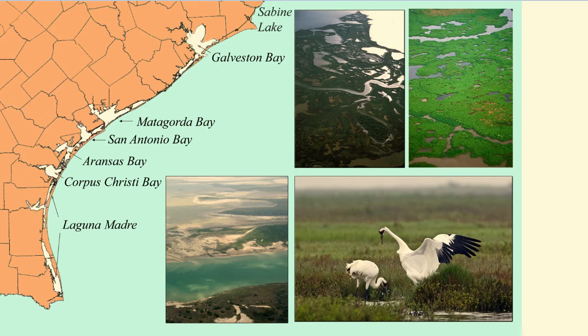In Texas, many bays are also estuaries. There's often no clear point at which the estuary ends and a bay begins. Some estuaries simply extend out into the Gulf where there are no bays. These places are often called deltas.